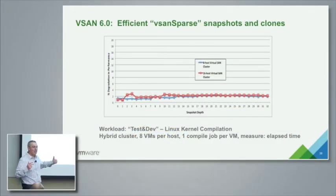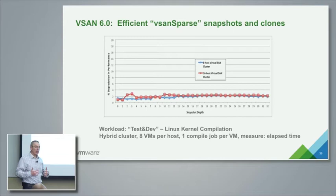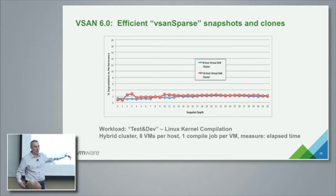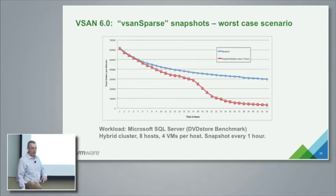Here is our traditional test and dev workload — many VMs running on the host doing Linux kernel compilations. Every time we pull in a couple of months of new Linux kernel development, we take a snapshot and do a clean rebuild. With all these snapshots up to 32, there is virtually minimal performance overhead.